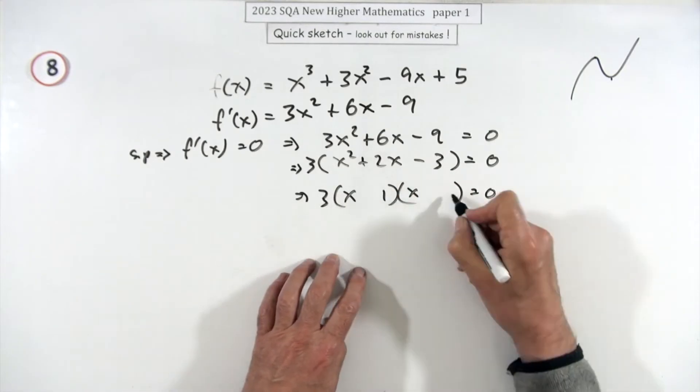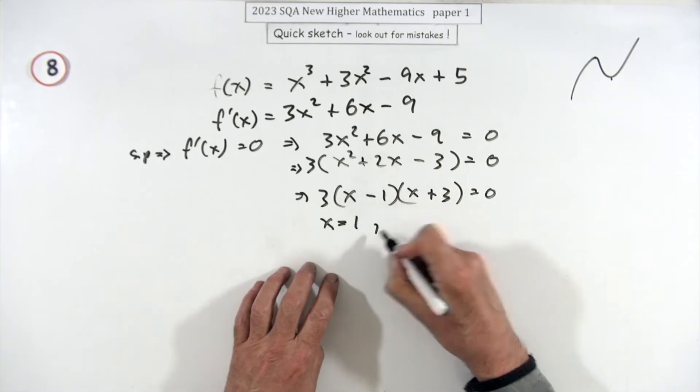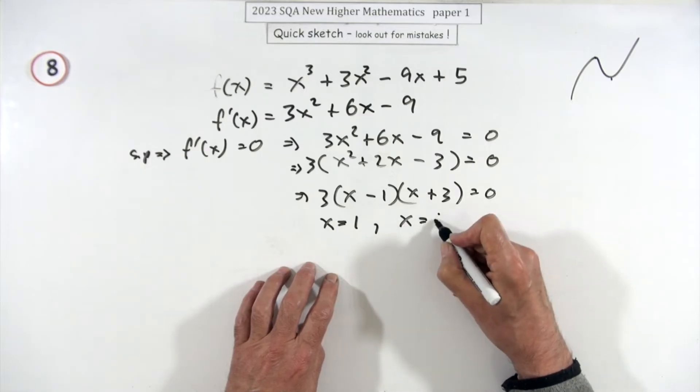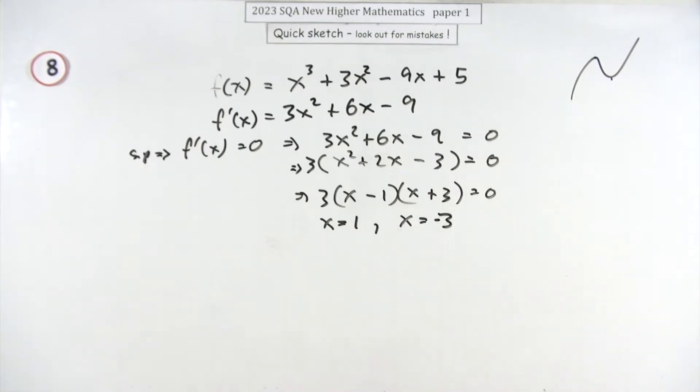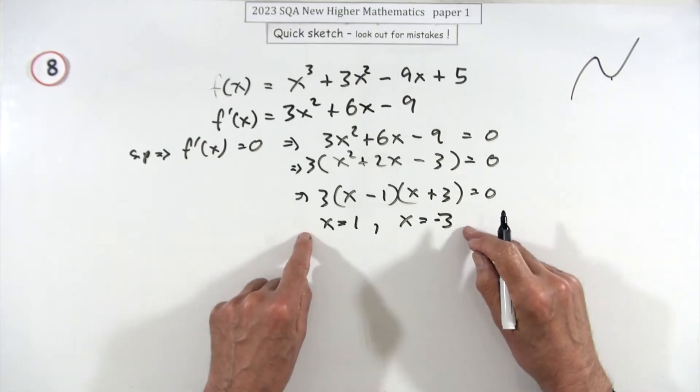Which means you've got 3 times, now I can do it: x times x, it must be one and three, it must be plus the three minus the one. So x is either equal to one or x is equal to negative three.